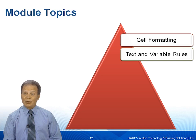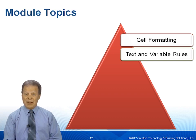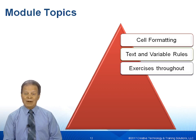We're going to create text and variable rules as part of conditional formatting. I can do cell formatting, but I can also introduce things like custom text messages, things like a red or green stoplight, and variable rules that allow me to display different objects from my universe based on conditions. Both of these options are very popular as part of the conditional formatting family. We'll also have exercises throughout for reinforcement.